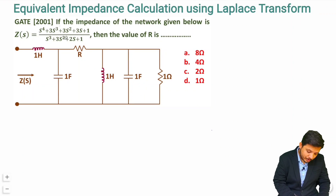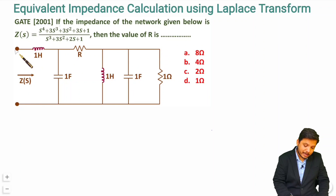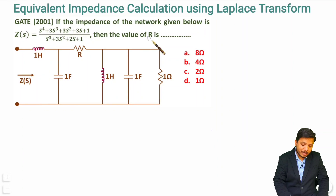In this question, the impedance of the network given below is Z(s), and the value of R is to be found. We are given a network whose impedance Z(s) is given by this expression. What students typically do is convert the circuit to the Laplace domain, calculate Z(s), compare it to the given expression, and extract R. That is one way, but it will take lots of time.